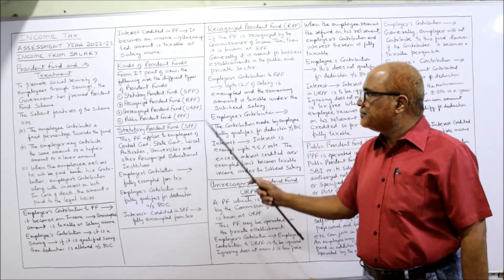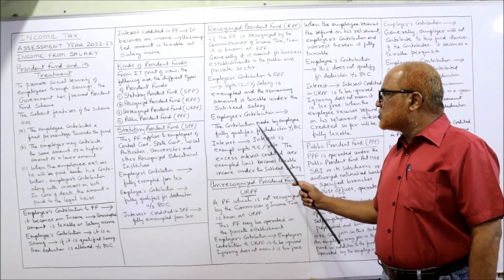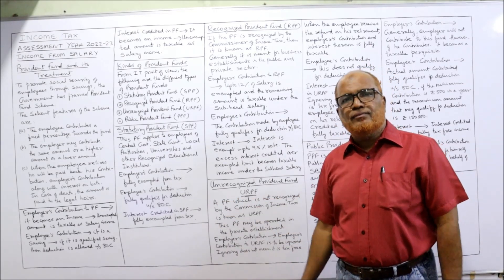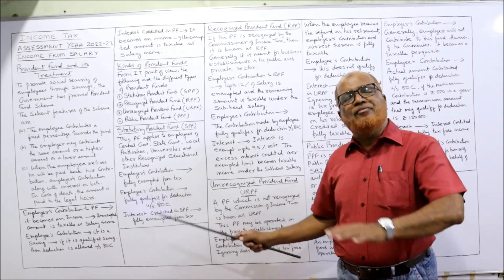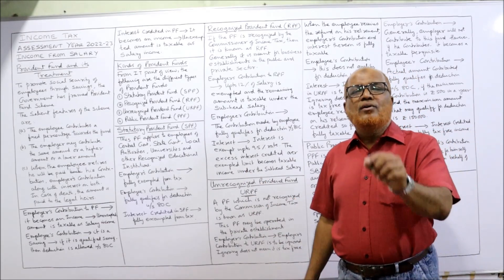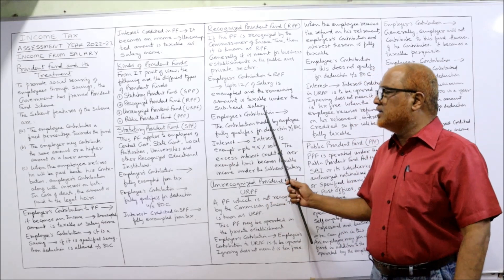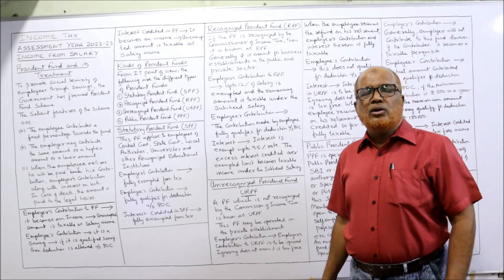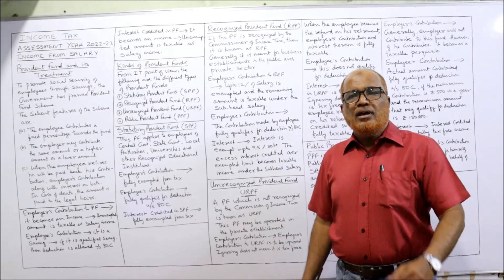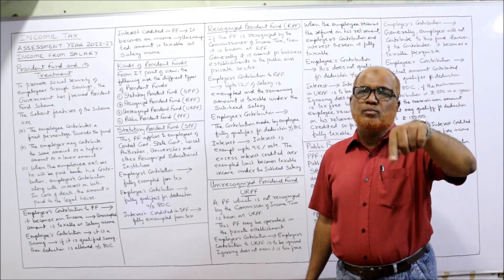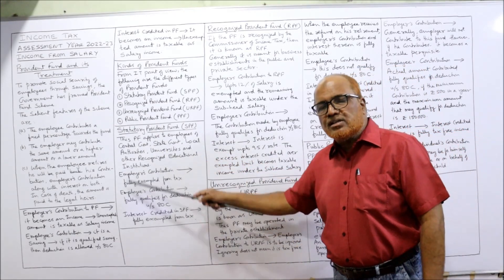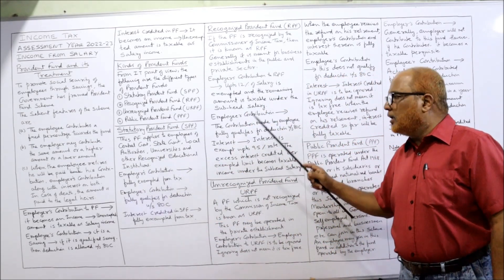Employee's contribution to RPF fully qualifies for deduction under Section 80C — just like SPF. Interest credited to RPF: if the rate of interest is up to 9.5%, it is exempted. If the rate of interest credited in RPF is more than 9.5%, the excess will be taxable under the head 'salary.'